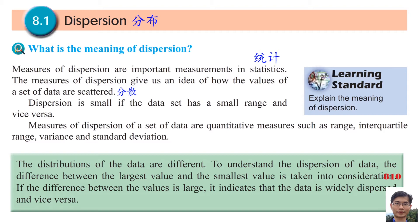Measures of dispersion of the set of data are quantitative measures such as range, interquartile range, variance, and standard deviation. Range, interquartile range, variance, and standard deviation all have their own formulas.